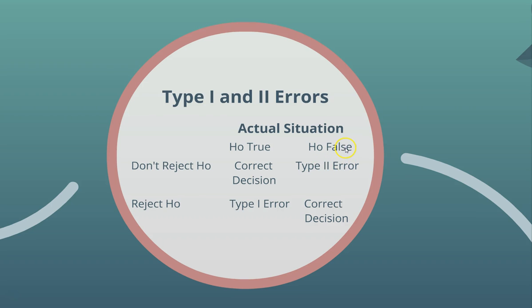In general statistical language, we never say we are rejecting the null hypothesis. We say we do not have enough evidence to accept the null hypothesis, and that is why we are accepting the alternative hypothesis. For example, in our judicial system, when making a decision they say the accused is being released because there is not enough evidence to prove the person is guilty.